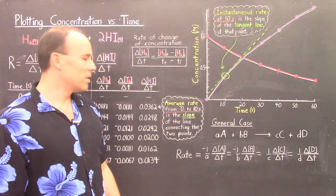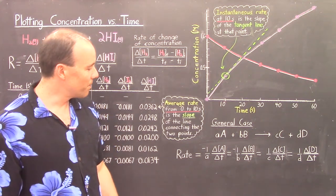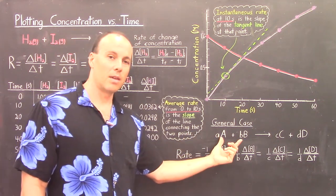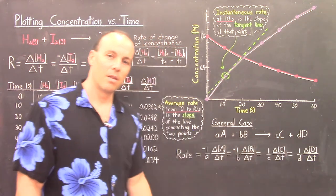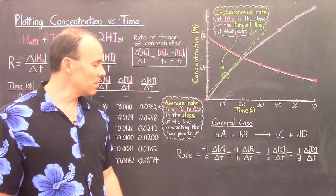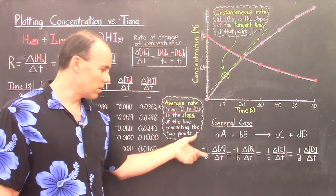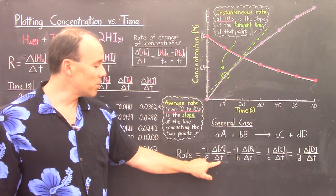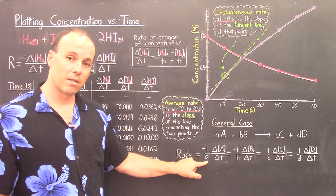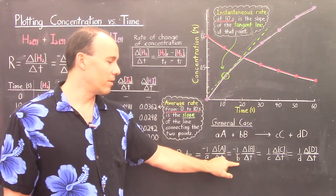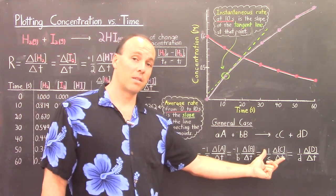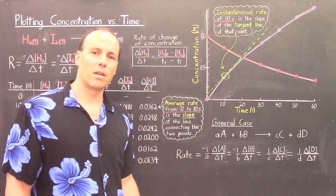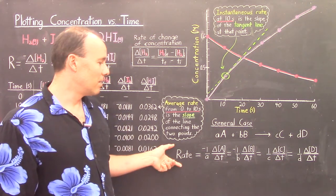We've been talking about one reaction, but in the general case, suppose we have a generic reaction where reactants A and B form products C and D. Then the rates with respect to these species are related by: negative 1/a × (Δ[A]/Δt) = negative 1/b × (Δ[B]/Δt) = positive 1/c × (Δ[C]/Δt) = positive 1/d × (Δ[D]/Δt). The reactants are preceded by negative 1 over their coefficients, and the products get positive 1 over their coefficients. All of these rate expressions then become equivalent, and you can call that the rate of the reaction.